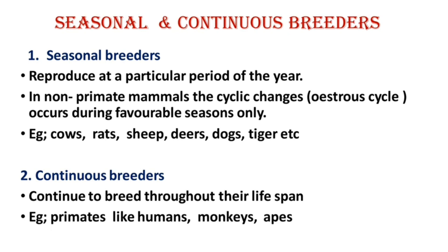Seasonal breeders have a particular favorable breeding time period. For example, cows, rats, sheep, deer, dogs, and tiger are seasonal breeders. Continuous breeders continue to breed throughout their lifespan.